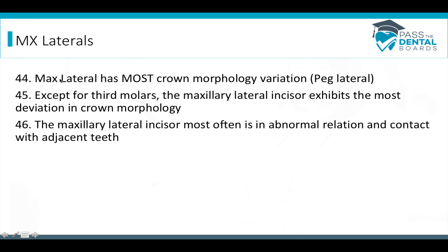The maxillary laterals have the most crown morphology variation, which mostly relates to the peg lateral. Except for third molars, the maxillary lateral incisor exhibits the most deviation in crown morphology. The maxillary lateral incisor most often is in abnormal relation and contact with the adjacent teeth.